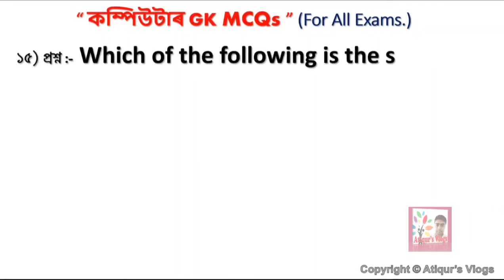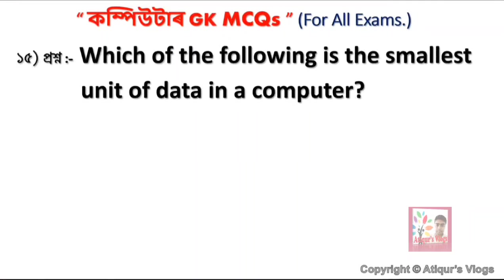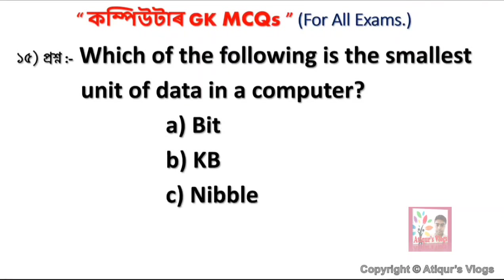Which of the following is the smallest unit of data in a computer? Options are: A — Bit, B — KB, C — Nibble, D — Byte. The correct answer is Bit — Bit is the smallest memory unit.